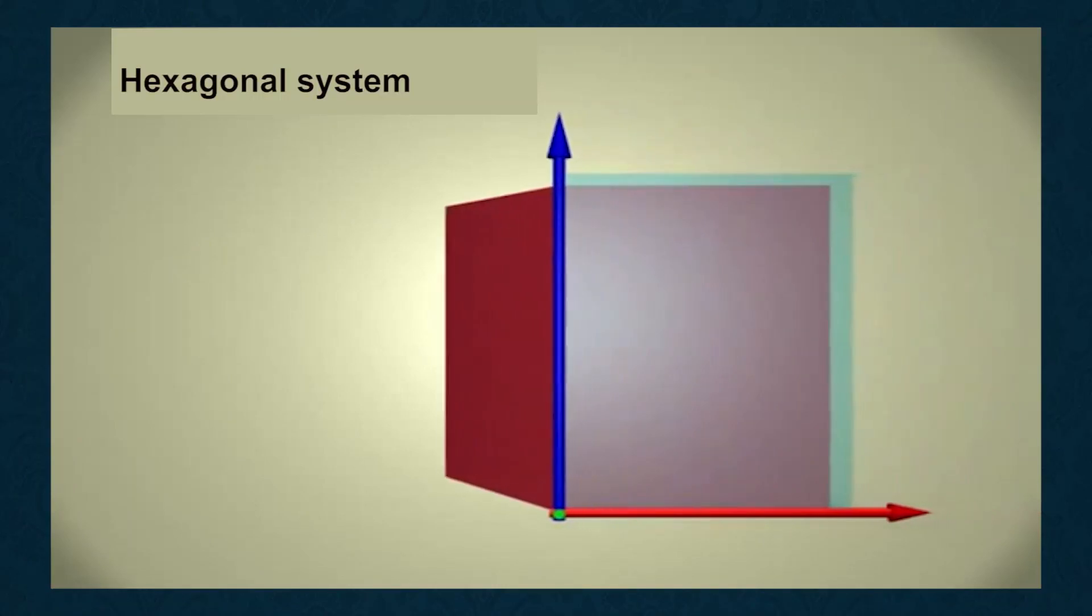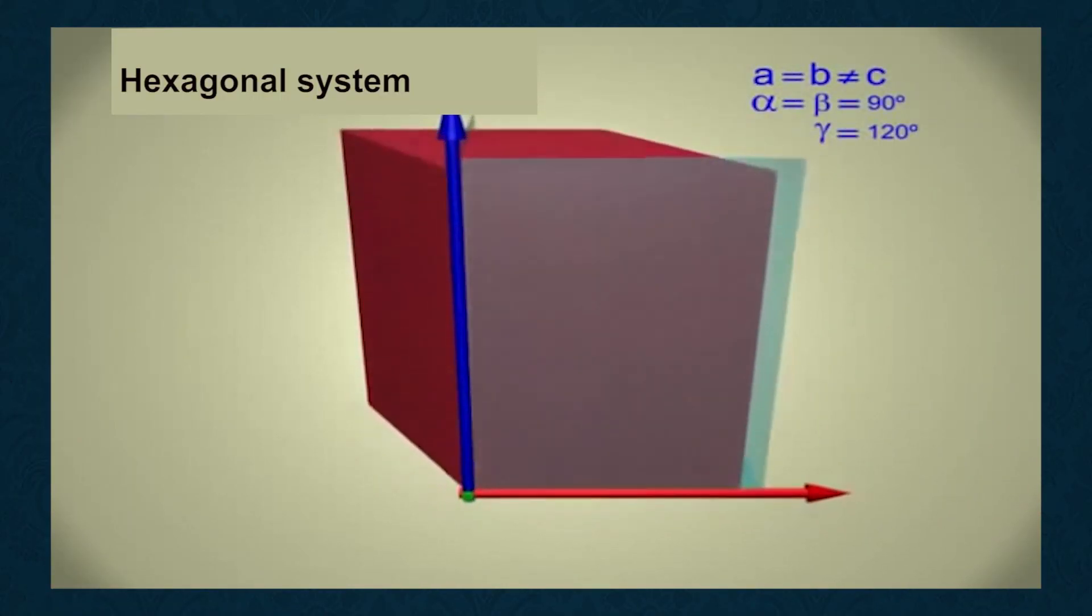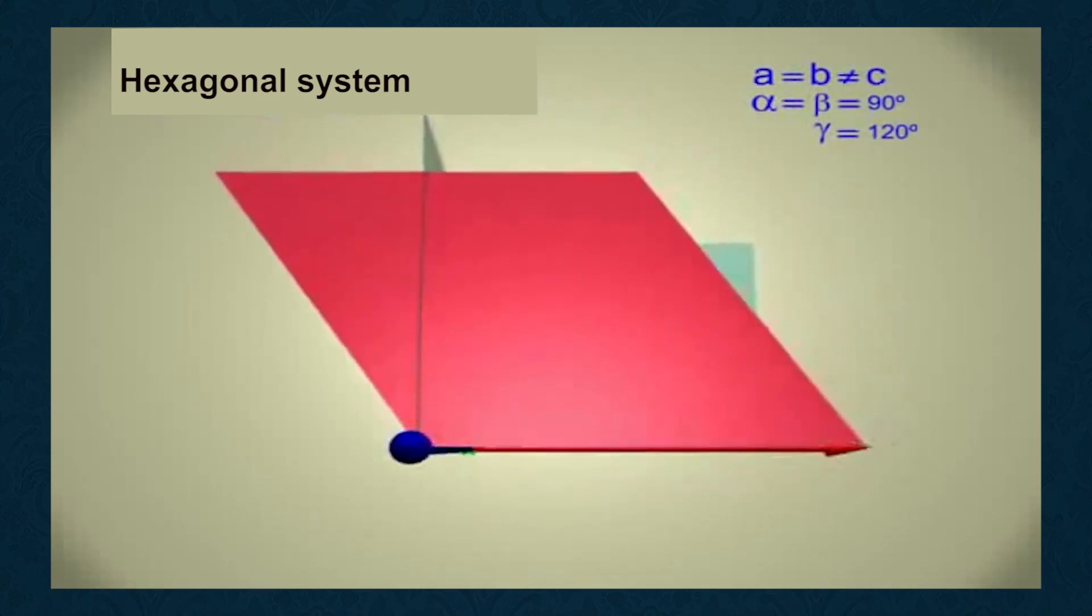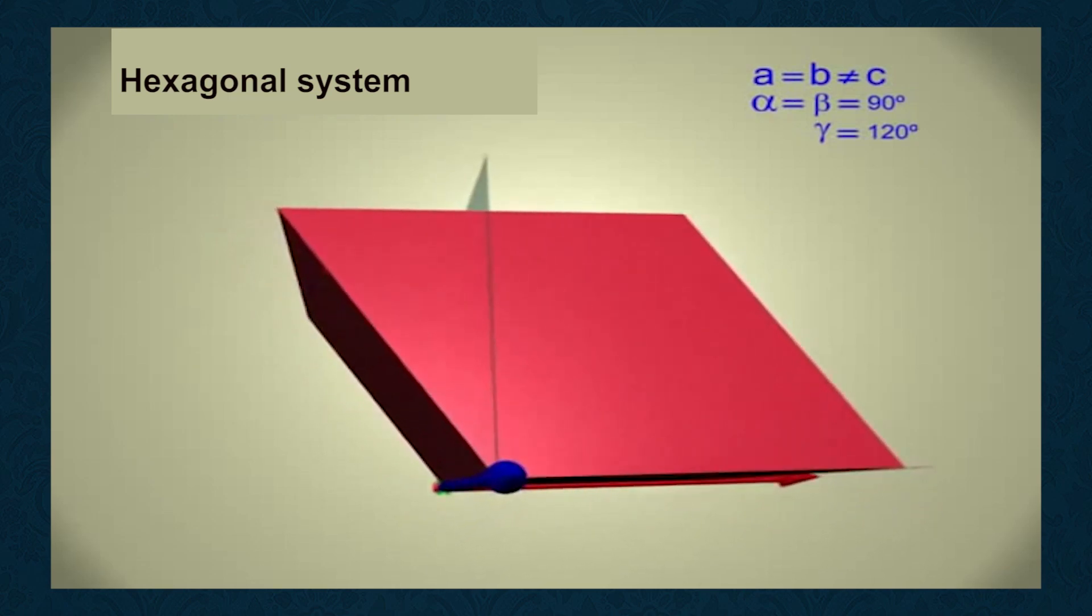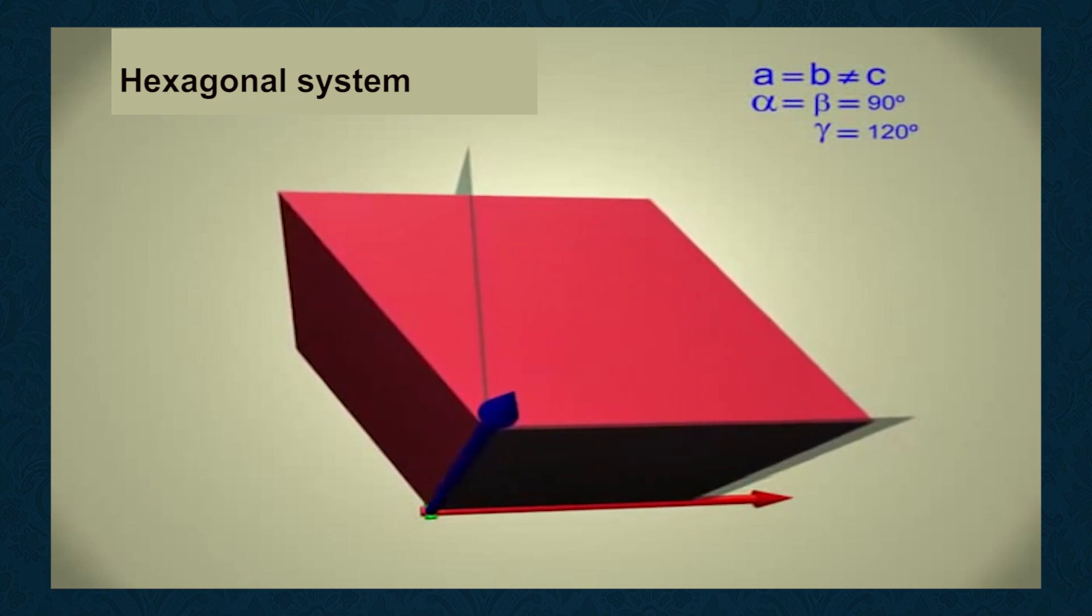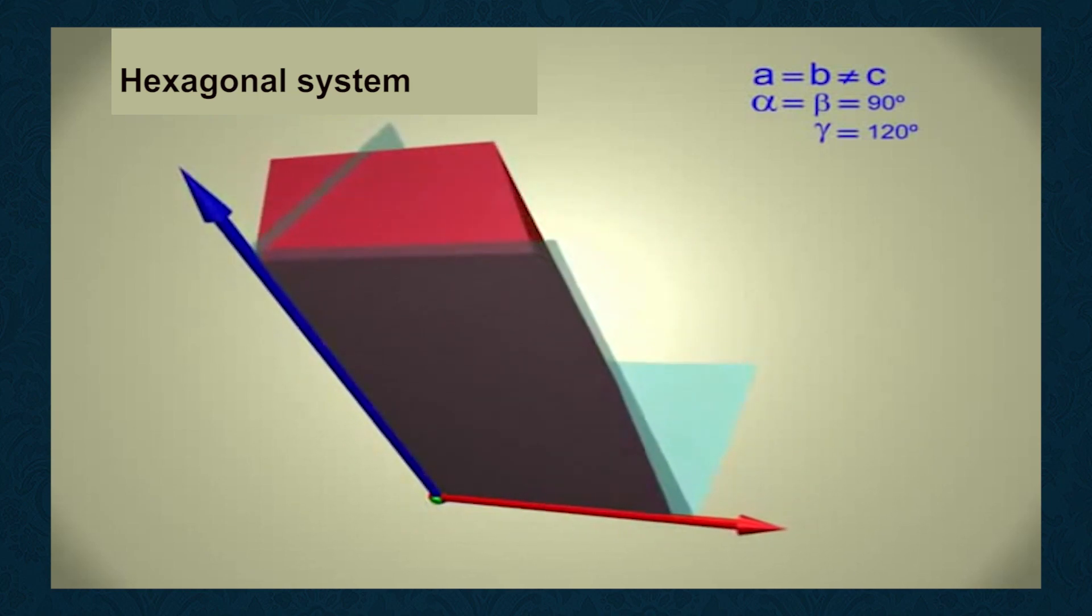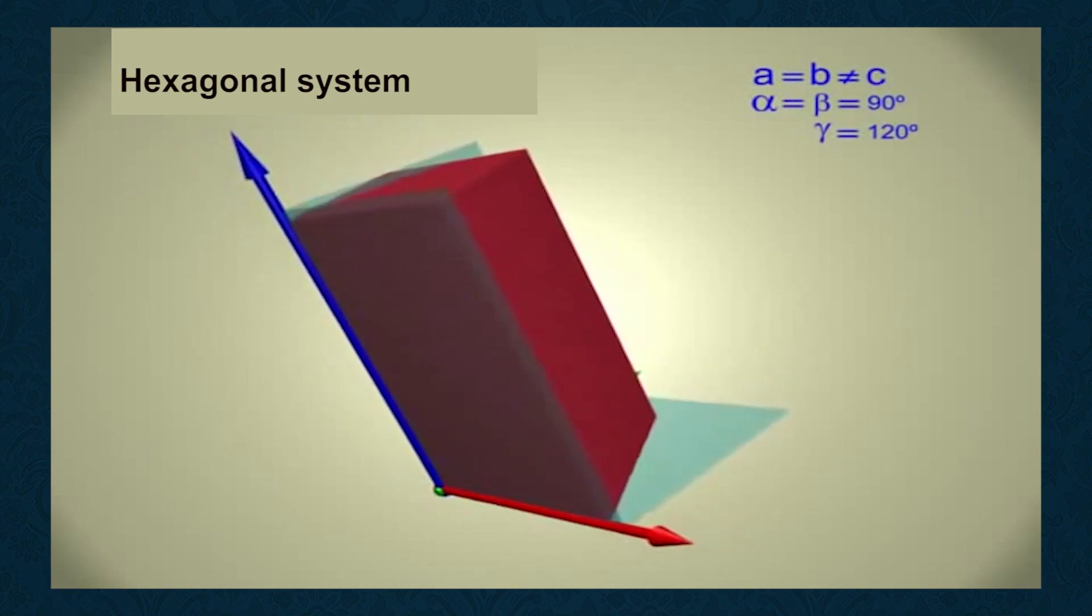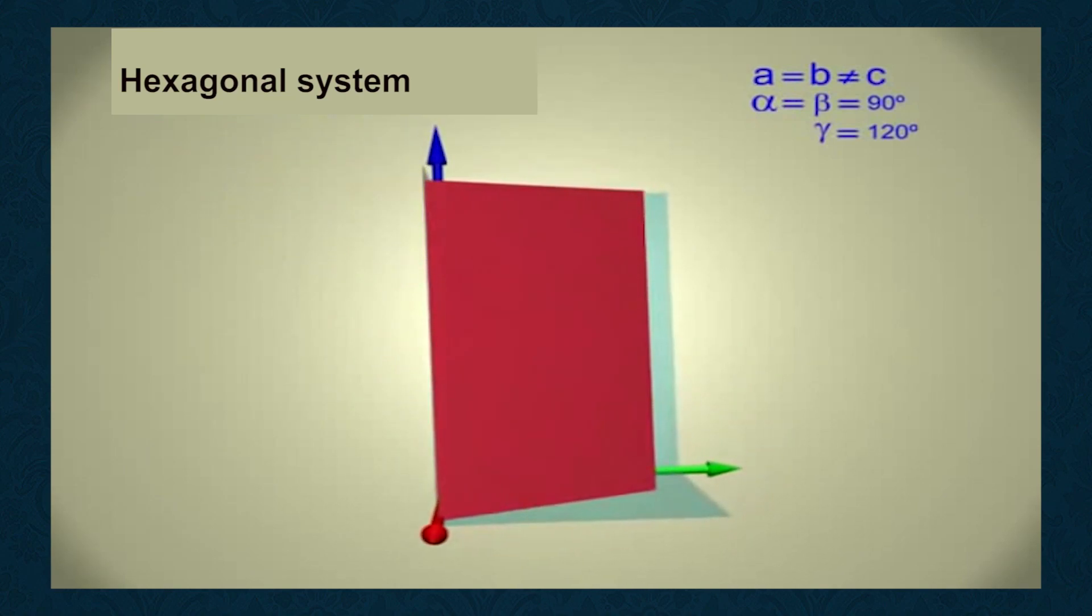Sixth, hexagonal system: Four crystallographic axes, of which three equal horizontal axes A1, A2, and A3 intersect at angles of 120 degrees, while the fourth vertical C axis is of different length and normal to the plane containing the three axes. A1 = A2 = A3, intersecting at 120 degrees.